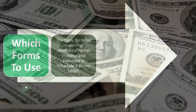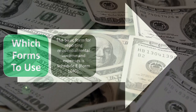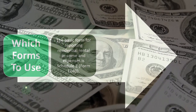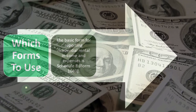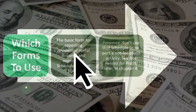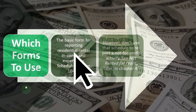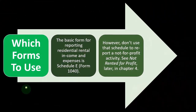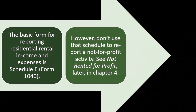So which forms to use? The basic form for reporting residential rental income and expenses is Schedule E, Form 1040, rather than the Schedule C. It looks much the same — it's an income statement type of form, but it's for the rental property.